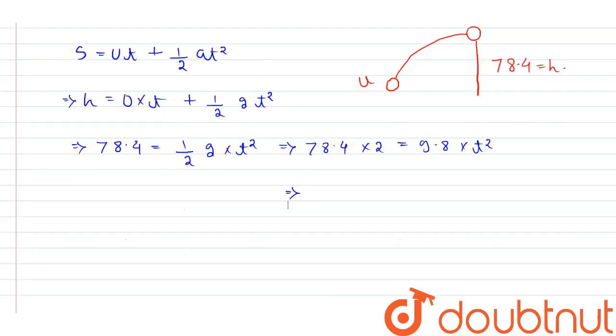From here we get t = √(78.4×2/9.8). So we get t = 4 seconds. The time is 4 seconds to reach the ground from the maximum height, and this is our answer.